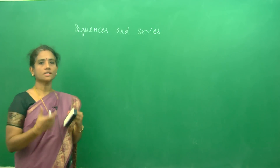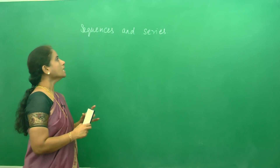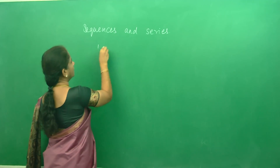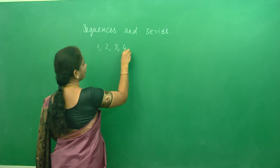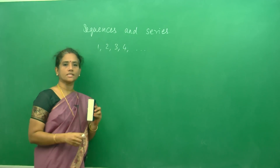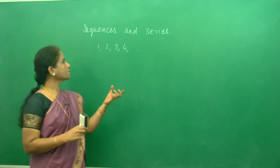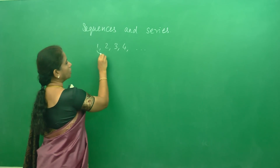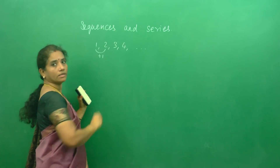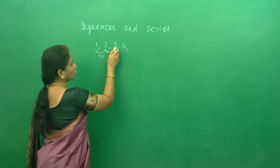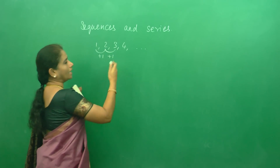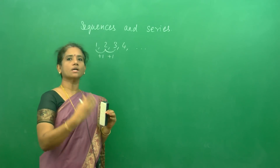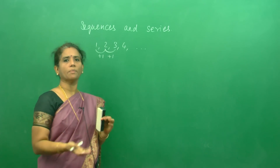Let us know what is a sequence. A sequence is an arrangement of numbers — for example 1, 2, 3, 4, etc. is a sequence. Why is it called a sequence? From the second number to the first number we are adding 1, and to get the third number we should add 1, and like that it goes on and on. It follows a rule. So the numbers are arranged so that they follow some rule.